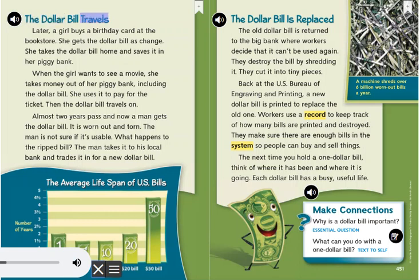The dollar bill travels. Later, a girl buys a birthday card at the bookstore and gets the dollar bill as change. She takes the dollar bill home and saves it in her piggy bank. When the girl wants to see a movie, she takes money out of her piggy bank, including the dollar bill, and uses it to pay for the ticket.